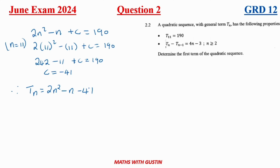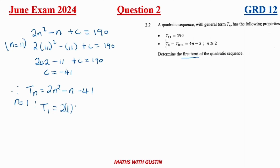The question asks for the first term of the quadratic sequence. Substituting n equals 1: t1 = 2(1)² minus 1 minus 41 = 2 minus 1 minus 41 = negative 40. So our answer is t1 equals negative 40.